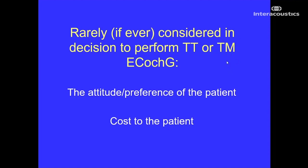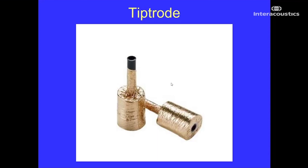We can't forget about the TipTrode device — the foam earplug of the tube insert transducer wrapped in conductive gold foil, coated with electrode gel, squished down, and put into the ear canal so it rests in the outer third. I don't prefer this for electrocochleography because TM recordings are much more sensitive and bigger, but we still have applications for it in children in particular.